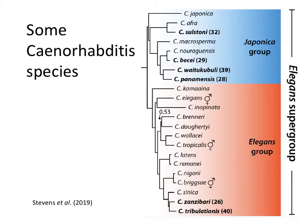In the nagoni-briggsae pair, which are also very closely related genetically, sometimes they can have viable fertile offspring, sometimes not, depending on who the parent is. So if the dad is one species and the mom is from the other, sometimes the cross will work, but not in the opposite direction — which is really interesting for geneticists to study and figure out why.